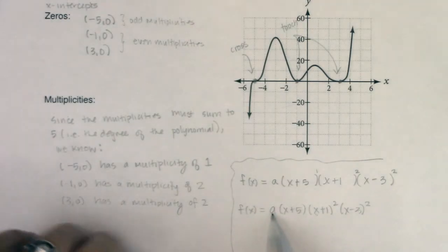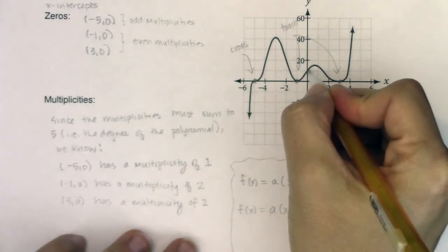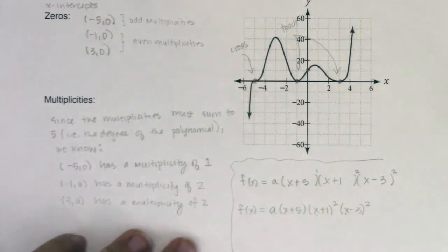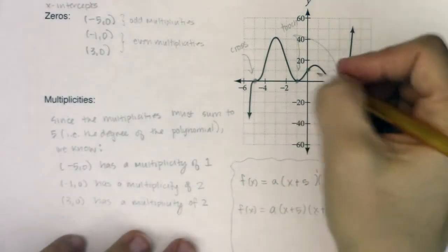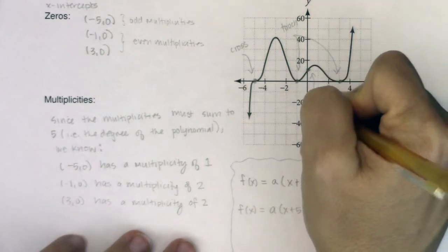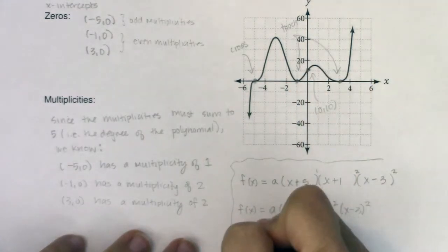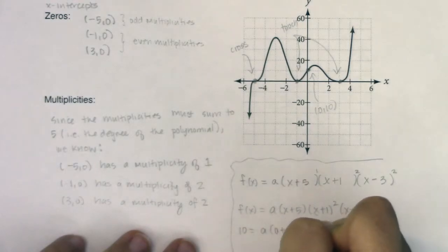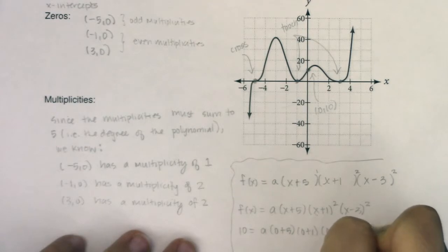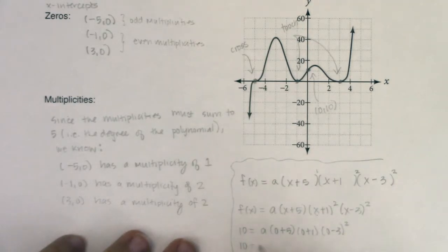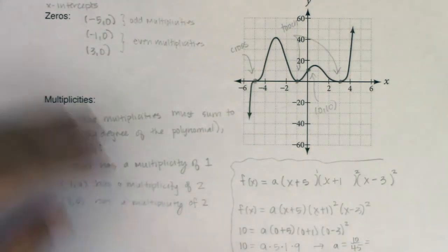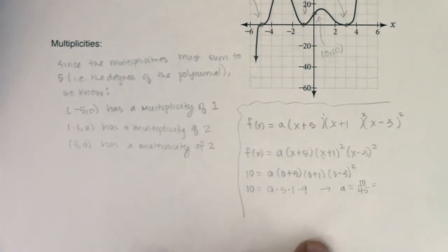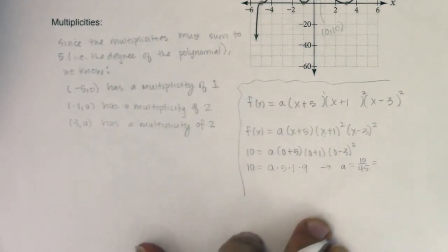If you ever wanted to find out the a value, the way we typically do that is we solve for a by plugging in the y-intercept. Now, this is above and beyond everything that was asked of you, but I want you to see this play out. So I also happen to know my y-intercept is at (0, 10). So you can plug in 10 for y, and you can plug in 0 for x, and we'll be able to solve for a. I get 10 equaling a times 5 times 1, this will be times 9. So if I simplify this a little bit, it looks like a is going to be equal to 10 over 45.